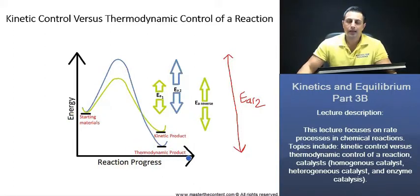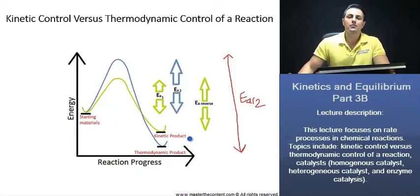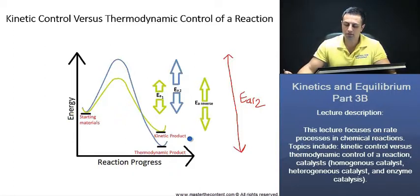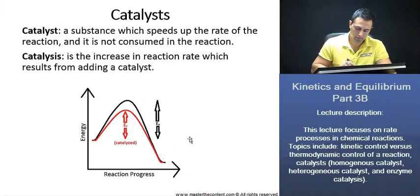And the ratio of thermodynamic product to kinetic product can be found through the respective equilibrium constants for the thermodynamic and kinetic products. Now let's move on to our next slide.